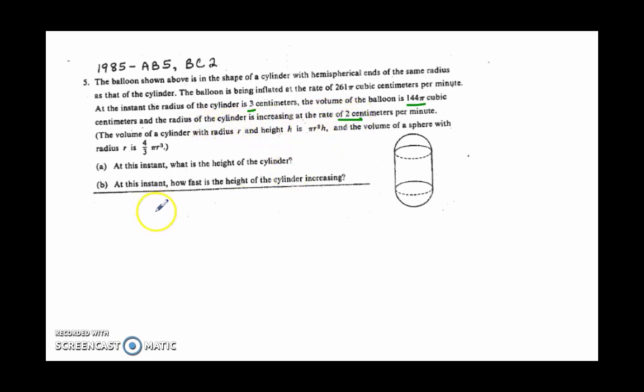And they're telling us that the volume of the whole balloon, which I'll call V, not B, I was going for balloon, but I'll go for volume, is the combination of the volume of the cylinder plus the volume of the sphere.